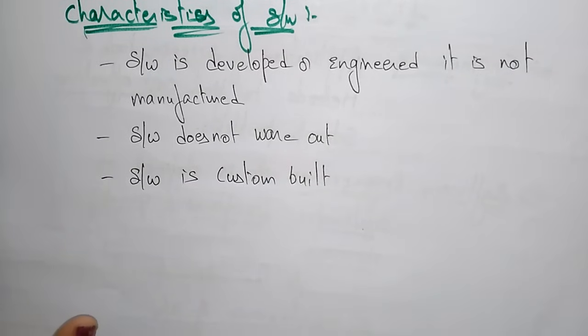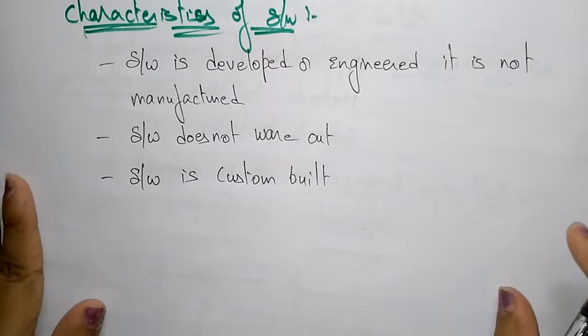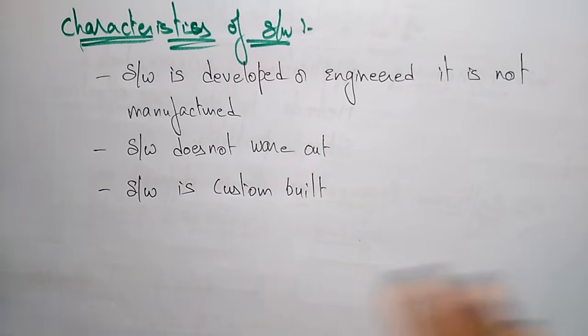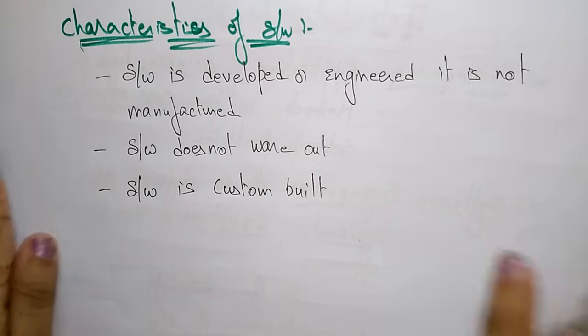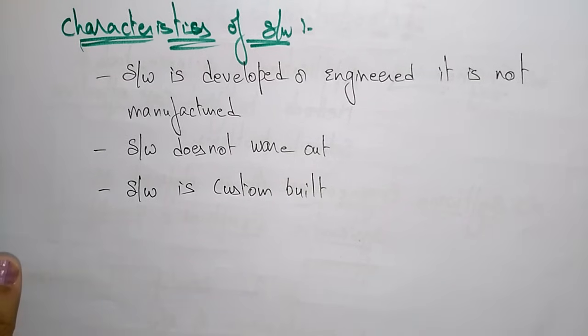These are the characteristics of software. This is the introduction part of software engineering. First you have to know what engineering is, the definition of engineering, and the simple characteristics of software. Thank you.